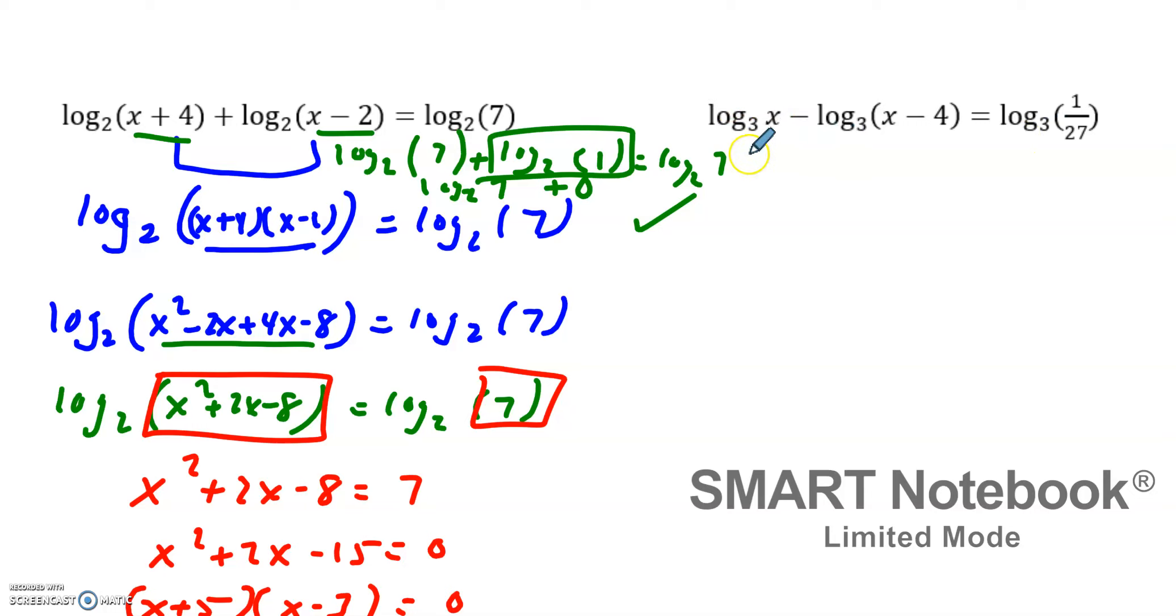So this last problem, we again have two logs on the side, except for this time the log base 3s are being subtracted. So we can make this into a single log, log base 3, but this time because we're subtracting, these two arguments are going to divide. So you have x divided by x minus 4 is going to equal log base 3 of 1 over 27.